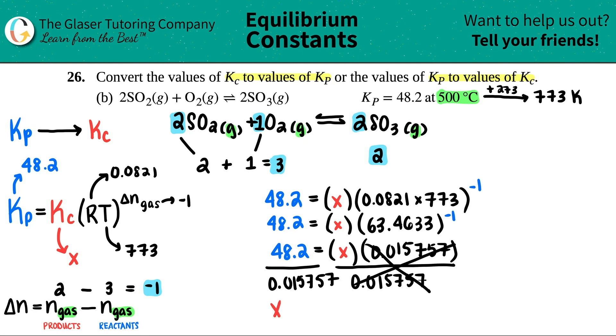And remember the X value was the Kc. All right. Let's see what we get. So 48.2 divided by this answer. Looks like I'll use three sig figs. So I'll put it in scientific notation. 3.06 times 10 to the 3. And there you go.